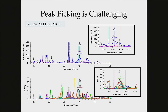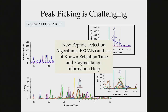New algorithms like our PECAN approach detect peptides directly from DIA. The use of spectral libraries — where we know retention time and fragment ion information — helps pick peaks in DIA data. We can also apply the decoy-based approach of generating decoys and using spectral library information, similar to the mProphet-style analysis.